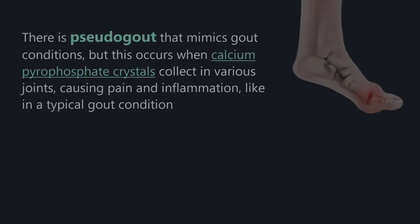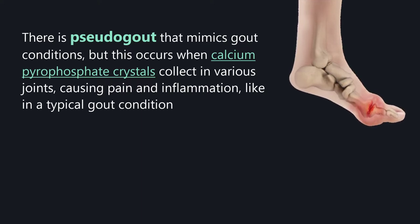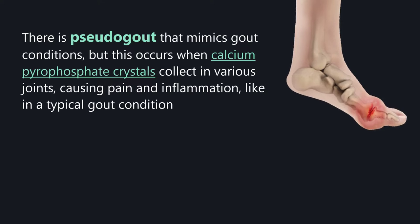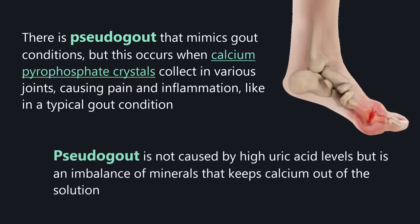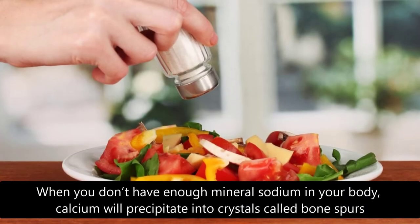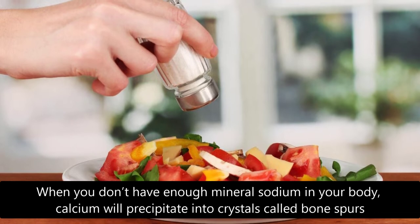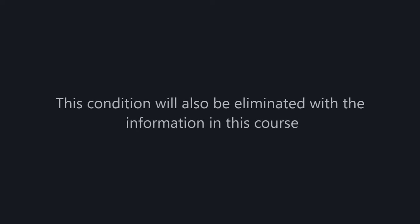There is also pseudogout, which mimics gout conditions, but occurs when calcium pyrophosphate crystals collect in various joints, causing pain and inflammation. Pseudogout is not caused by high uric acid levels but by an imbalance of minerals. When you don't have enough sodium in your body, calcium will precipitate into crystals called bone spurs. This condition will also be addressed with the information in this course.